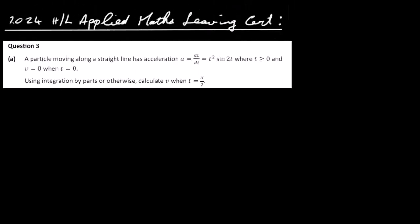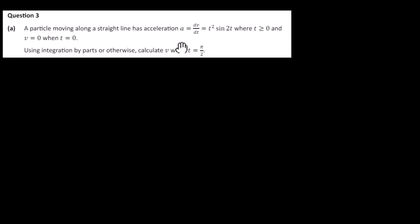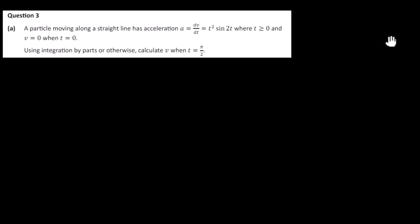This is the 2024 Higher Level Applied Maths Leaving Cert paper, question 3. A particle moving along a straight line has acceleration a, dv/dt = t² sin(2t), where t ≥ 0, and v = 0 when t = 0. Using integration by parts or otherwise, calculate v when t = π/2.